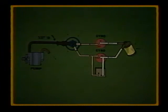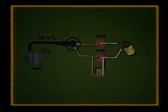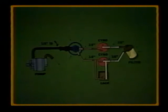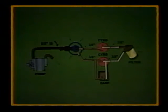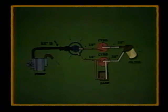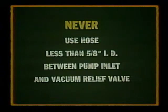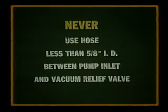In addition, the hose from the pump to the vacuum relief valve in a vacuum system should be no smaller than 5/8 inch inside diameter. If the gyros are connected in parallel, each gyro should have a 3/8 inch inside diameter connecting line from the central filter and to the relief valve. In a vacuum system, never use a hose less than 5/8 inch inside diameter between the pump inlet and vacuum relief valve.